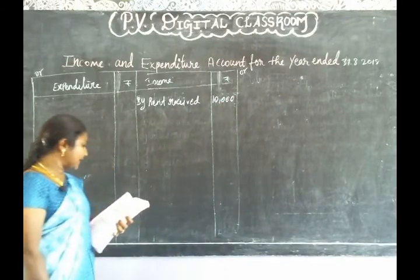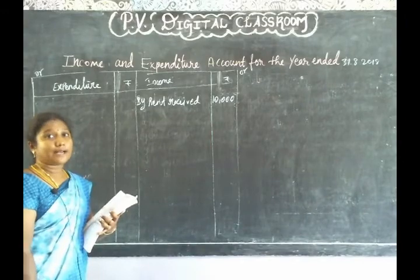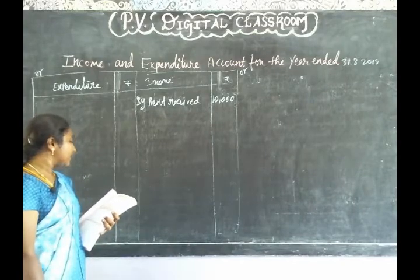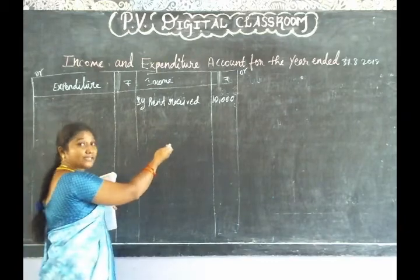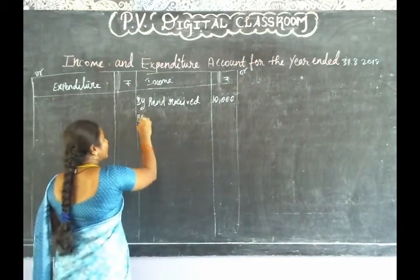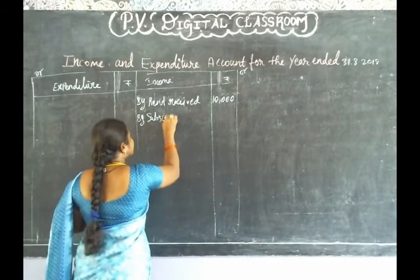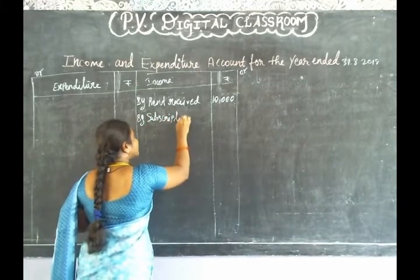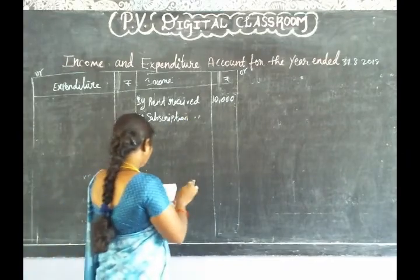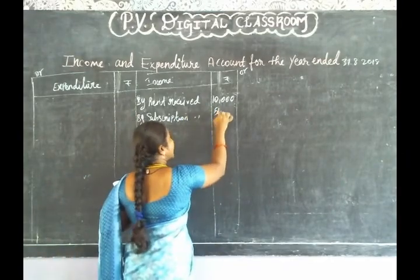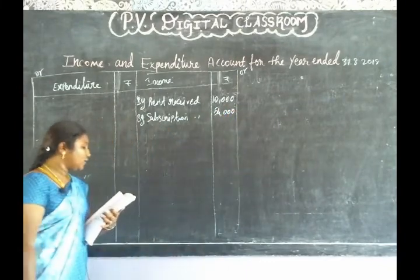Next one is sale of investment. Sale of investment is noted. Next one is subscription received. Subscription received is 54,000. The income value is noted. The price will be 54,000.